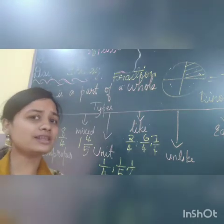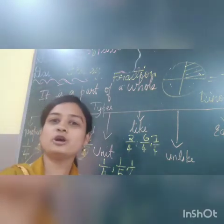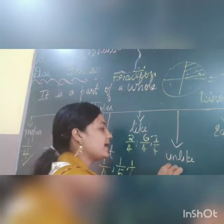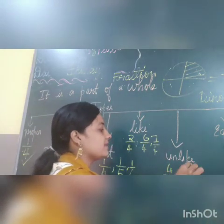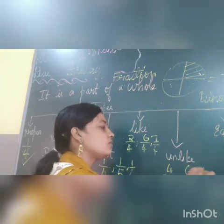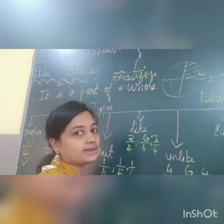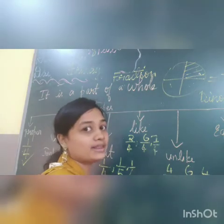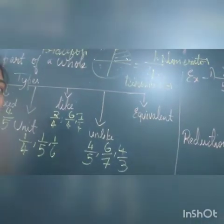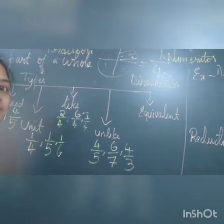Now you yourself can say what is unlike fraction — the denominator should be different. That is called unlike fraction. Like 4 by 5, 6 by 7, 4 by 3 — if you see, the denominators are different. So this is called unlike fraction.